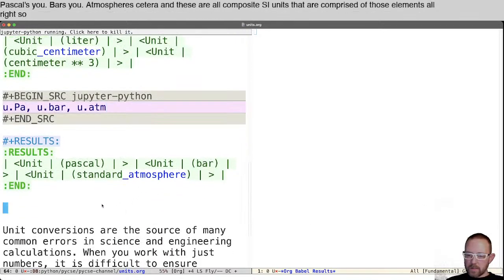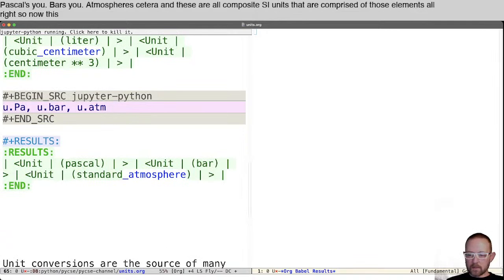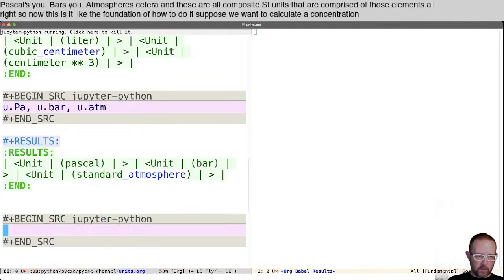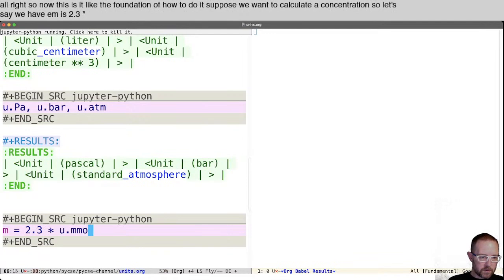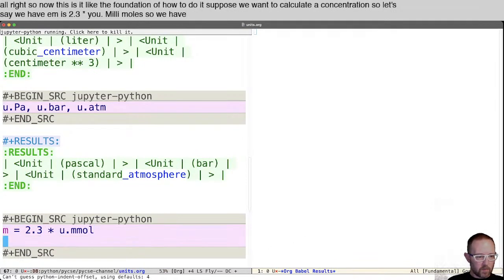All right. So now this is the like the foundation of how to do it. Suppose we want to calculate a concentration. So let's say we have M is 2.3 times u dot millimoles. So we have 2.3 millimoles. And suppose the volume was, let's say, 10 cubic centimeters.